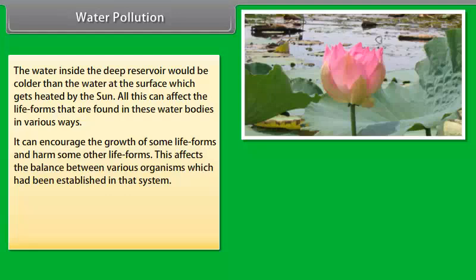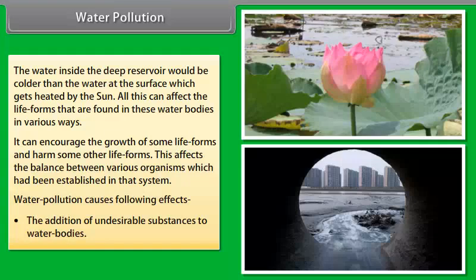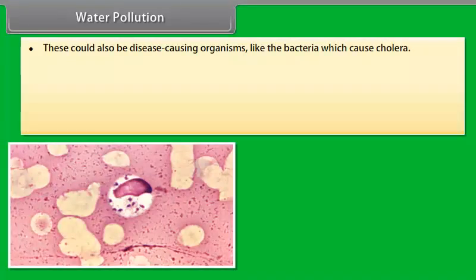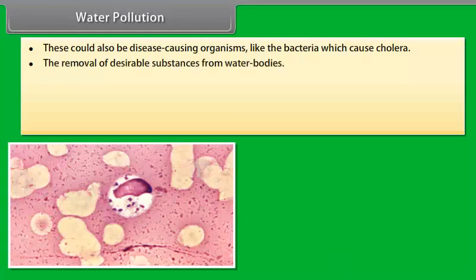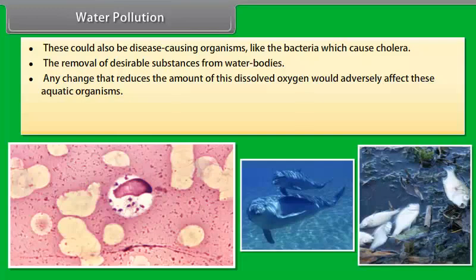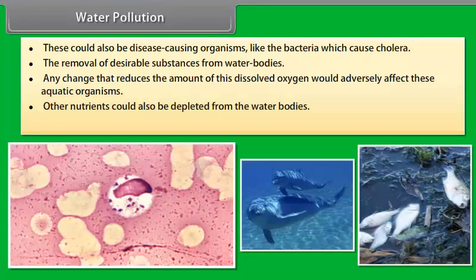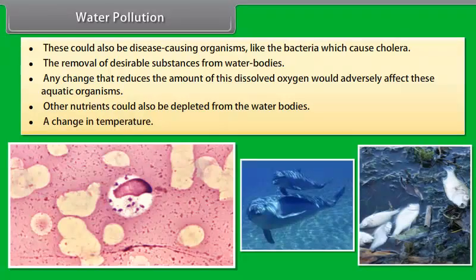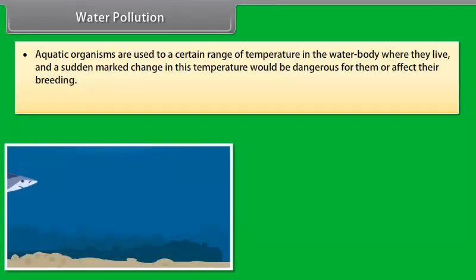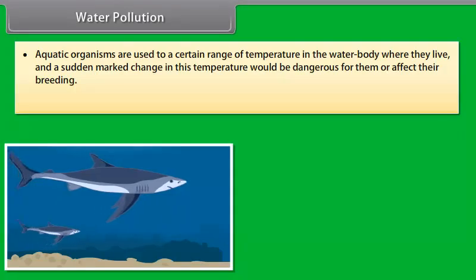Water pollution causes following effects. The addition of undesirable substances to water bodies. These could also be disease-causing organisms like the bacteria which causes cholera. The removal of desirable substances from water bodies. Any change that reduces the amount of dissolved oxygen would adversely affect these aquatic organisms. Other nutrients could also be depleted from the water bodies. A change in temperature. Aquatic organisms are used to a certain range of temperature in the water body where they live and a sudden marked change in this temperature would be dangerous for them or affect their breeding. The eggs and larva of various animals are particularly susceptible to temperature changes.